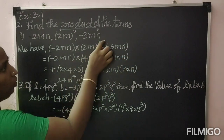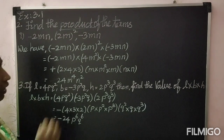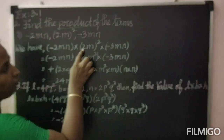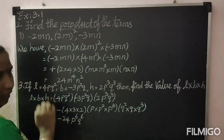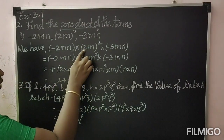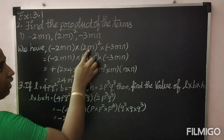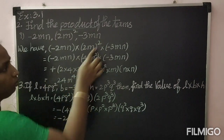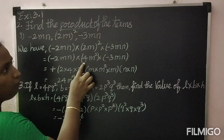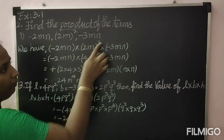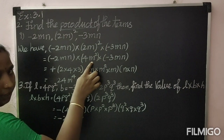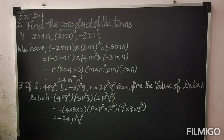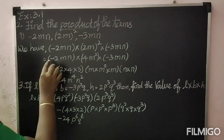What is 2m whole square? This square belongs to both 2 and m, so you have to square both 2 and m also. So 2 squared is 4, giving 4m squared. Now you can multiply this.